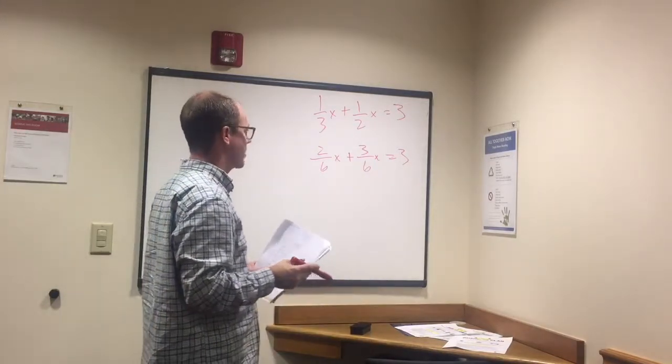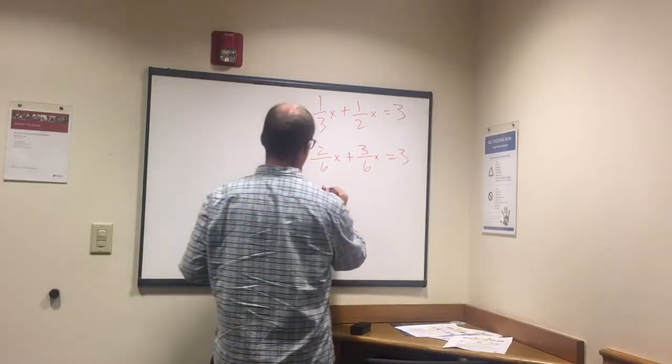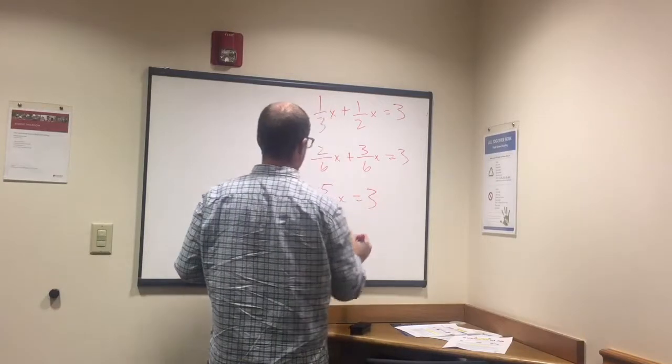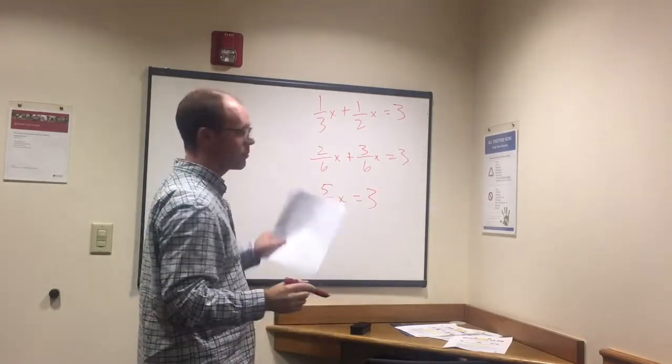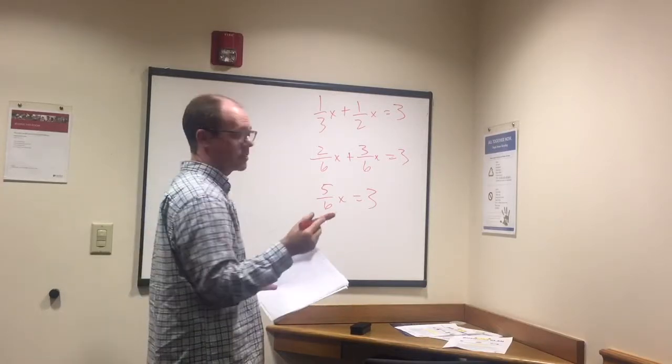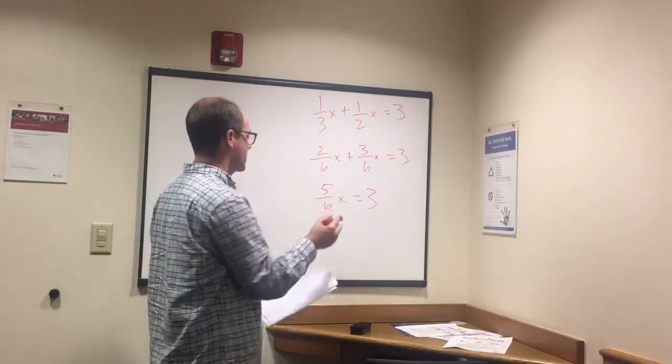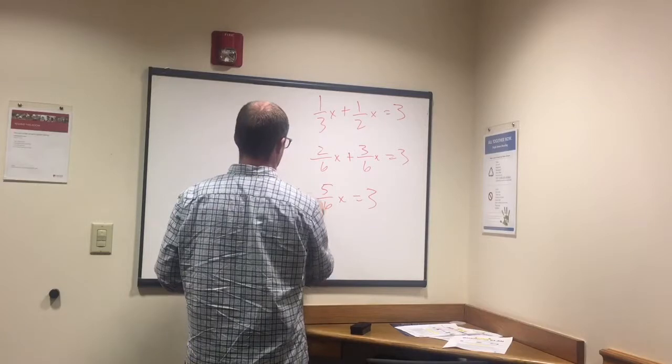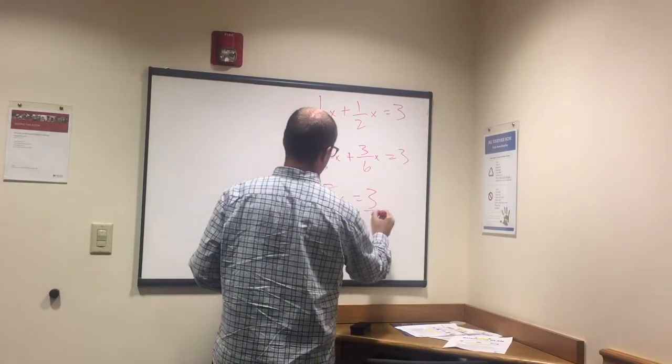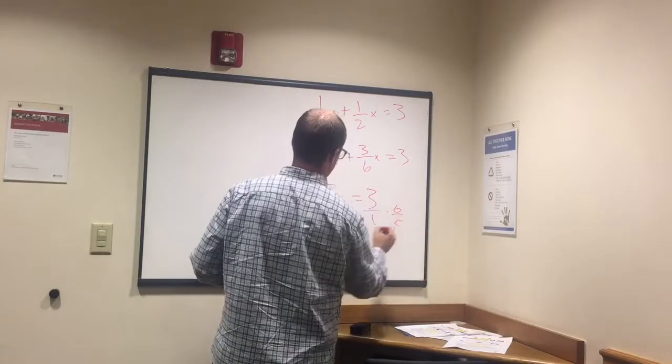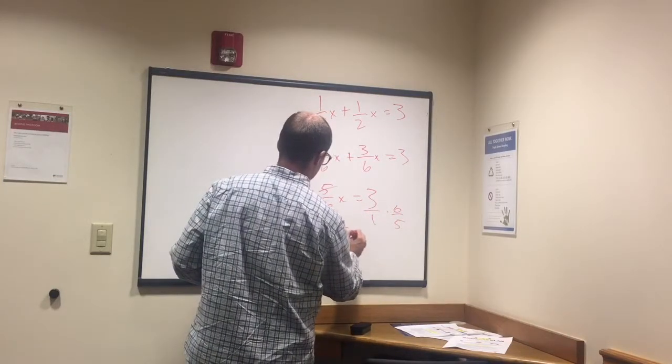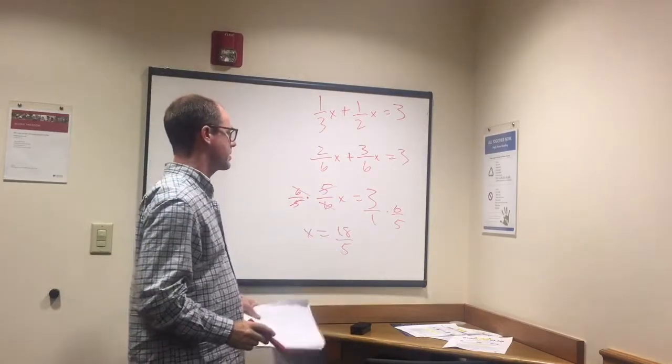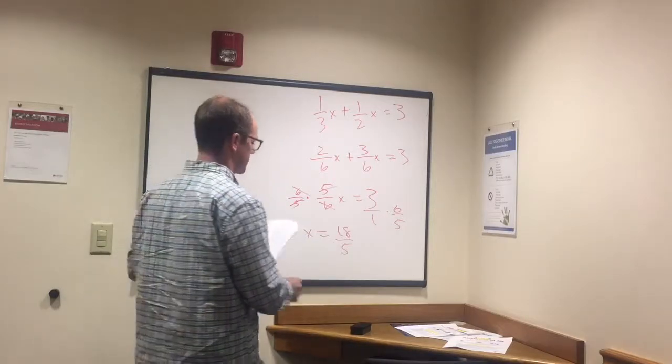Okay, so now we can add these two together. So 2 sixths plus 3 sixths equals 5 sixths x equals 3. And now we need to get rid of this 5 sixths, so I need to multiply it by what's called the inverse. So the inverse of 5 sixths is 6 over 5. So when I multiply that by 6 out of 5, that's going to cancel everything out and then we just have x. And remember to do it to the other side. X equals 18 fifths. 3 times 6 is 18, 1 times 5 is 5.